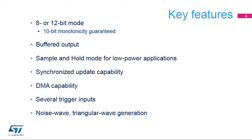10-bit monotonicity is guaranteed. The DAC output can have a low-impedance buffer to drive external loads. Its sample and hold mode can reduce power consumption significantly. Two DACs can be synchronized with each other. The input data can be transferred by DMA, which offloads the CPU. The DAC output data can be updated by a timer, an external trigger, or a software trigger. It also integrates small logic to generate noise waves as well as triangle waves.